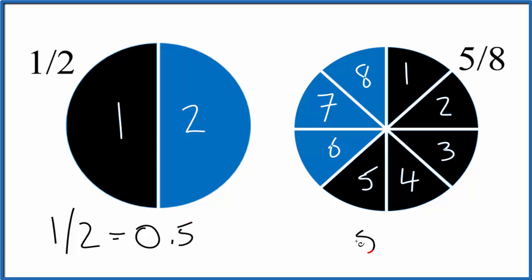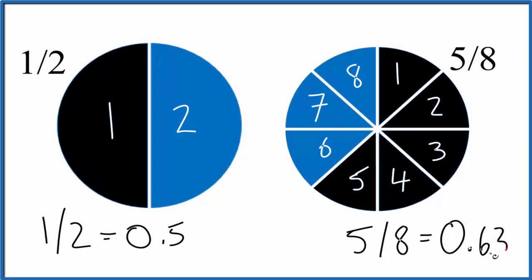If we divide 5 by 8, we get 0.625. Let's call it 0.63. And you can think of this as 0.50. And you can see that 5 eighths is larger than 1 half.